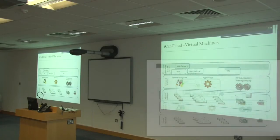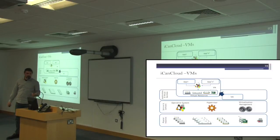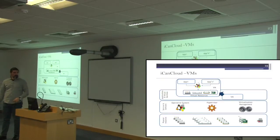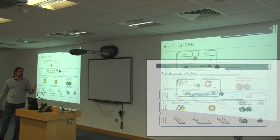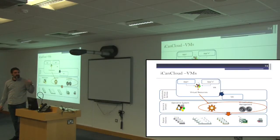In iCanCloud, virtual machines are empty boxes — they don't have real resources. It's possible to put more than one application within a virtual machine and study the performance degradation between applications and between different virtual machines on the same server. Each virtual machine has its own operating system and set of virtual resources. In reality, those virtual resources don't exist — the requests are captured by the hypervisor, which uses policies to schedule them directly to the simulated physical resources.